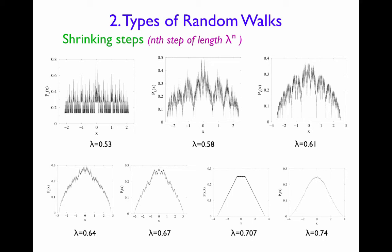Another interesting special case is lambda = 0.707, which is actually 1/√2. Here the probability distribution is made up of three linear segments: two tilted lines and one flat line. There are many other beautiful special cases of this type of random walk with shrinking steps.